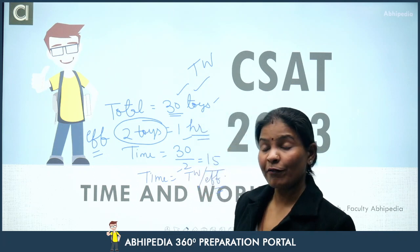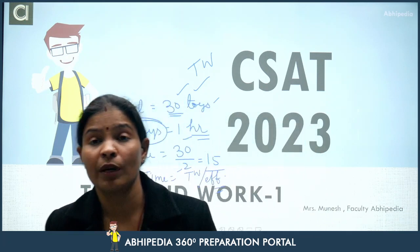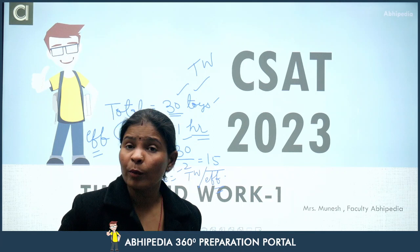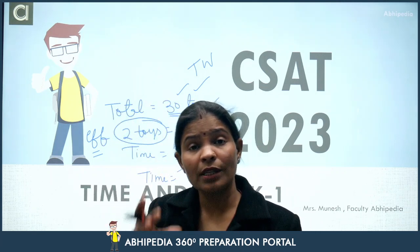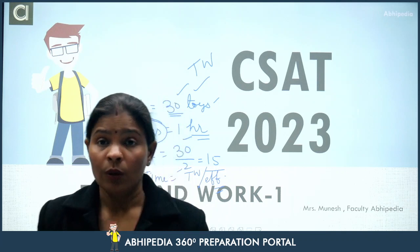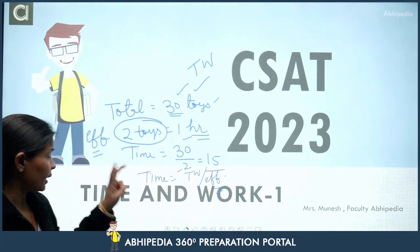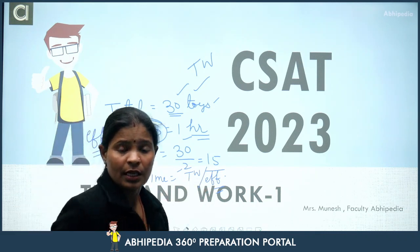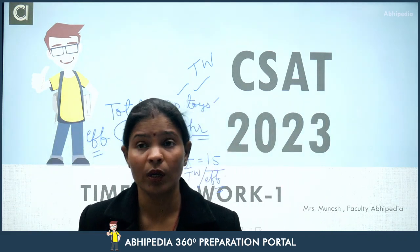Similarly, in different questions the efficiency may be given in percentage form, in ratio form, or days may be given from which you can find out the efficiency. Finally, we need three facts: Time, Total Work, and Efficiency. All of time and work is based on these three things.